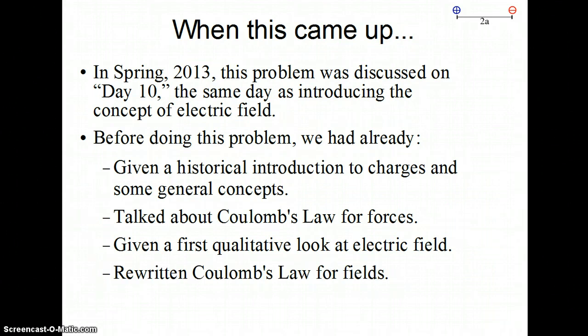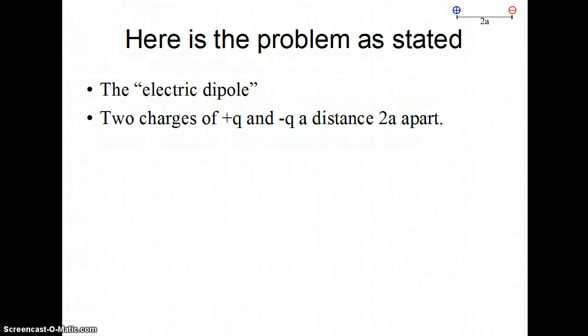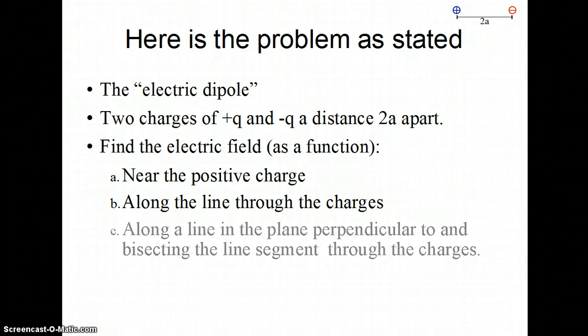Finally, we'd rewritten Coulomb's Law for fields near a set of fixed charges. The problem, as stated, did not give a drawing. It just called it the electric dipole and said there were two charges with the same magnitude but opposite signs, a distance apart, and we called that distance 2A. It said to find the electric field as a function of space coordinates near the positive charge, then along the line through the charges, then along a line that is a perpendicular bisector to the segment through the charges.